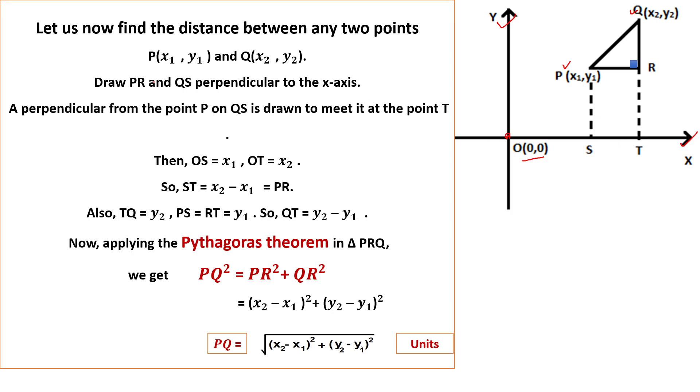Now this is PS and QT that is perpendicular to the x-axis. This is PS and QT are the perpendiculars.